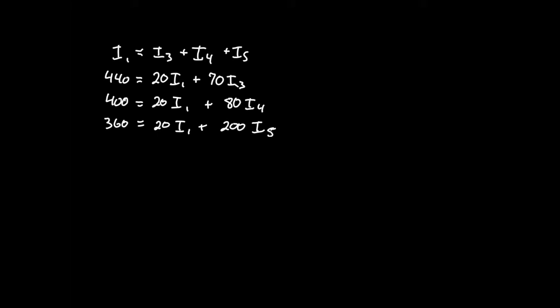Now let's think through an example from a physics class. If we have electrical circuits, one thing we may have to do is write equations using Kirchhoff's loop rule and Kirchhoff's junction rule. These four equations are the type you might get from something like that. We have four different values of i — current in a circuit — that we're trying to solve for, and we were able to write four different equations that relate those four variables or some subset of them.